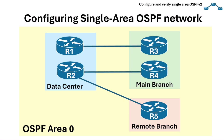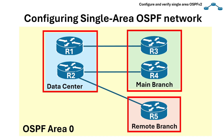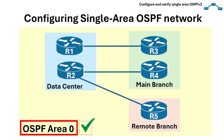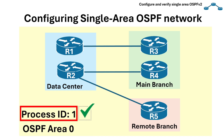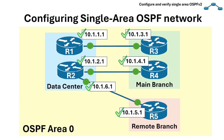Let's now configure a single-area OSPF router. Given this topology, we have three locations: the data center, main, and remote branch. The entire network must be configured with OSPF version 2 area 0, and it should use OSPF 2 with a process ID of 1. Before configuring OSPF 2, make sure each router interface has an IP address and is up.